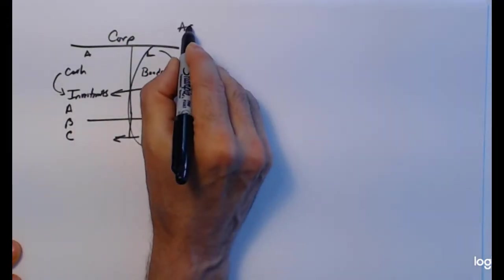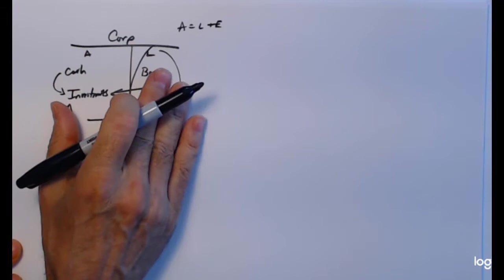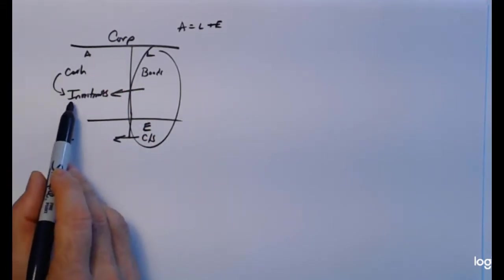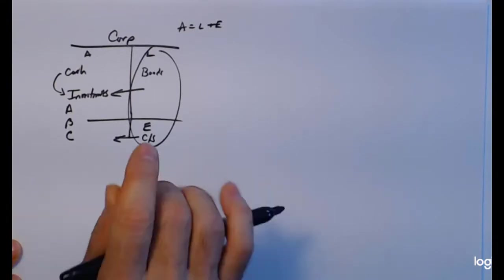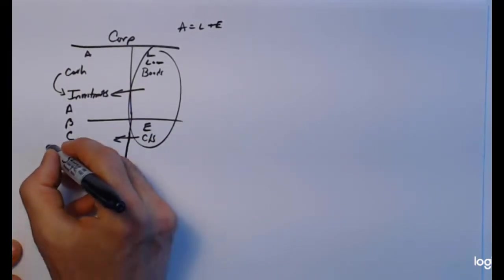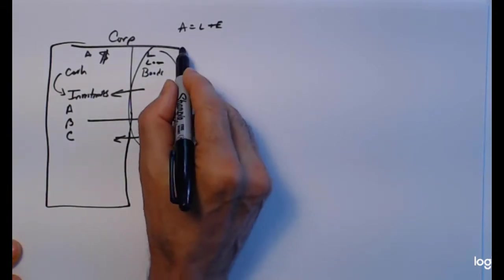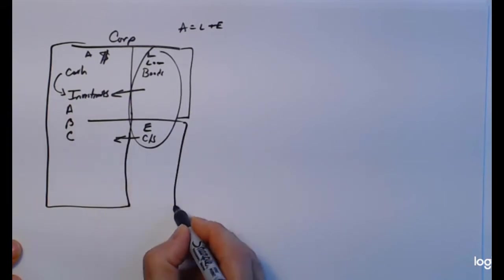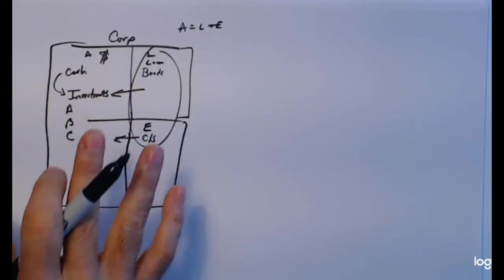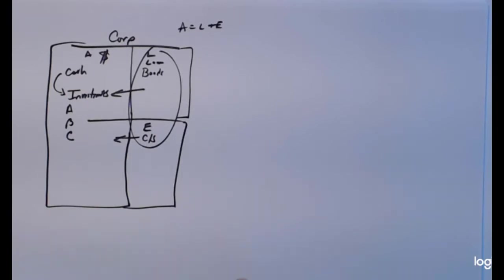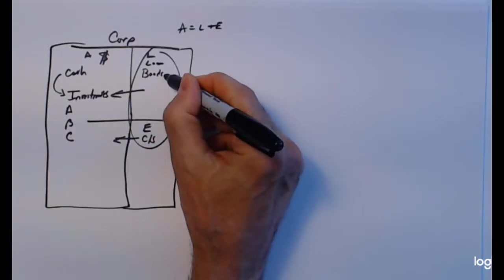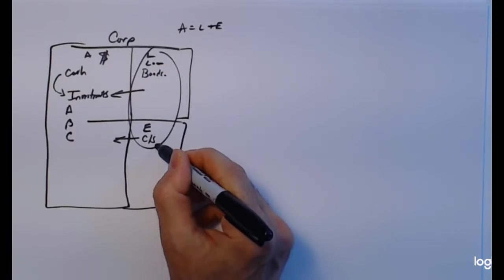Our balance sheet balances because assets equal liabilities plus equity. The goal of the corporation is to expand the market value of its assets. If it expands the market value of its assets while bonds and loans remain fixed, the equity increases — that's your ownership. Somebody owns this corporation, they own these shares. In that course, we looked at risk and return of various projects, bonds, stocks, and portfolio concepts.